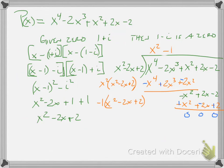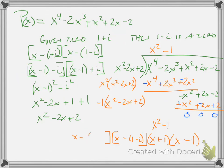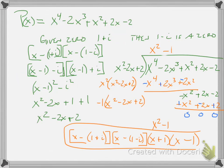I'm not going to go through the whole dividing process, but I have the work here — my sign changes are in blue. I get x squared minus 1, which then factors into x plus 1 times x minus 1, along with the other factors of x minus (1 minus i) and x minus (1 plus i). So that's my factored form. My zeros are 1 plus i, 1 minus i, negative 1, and positive 1.